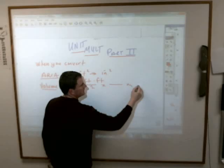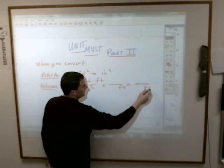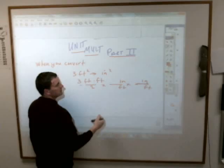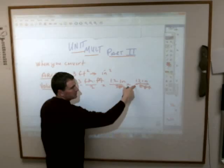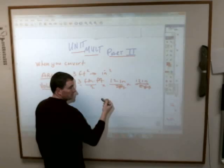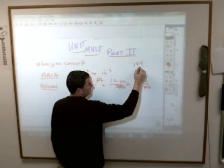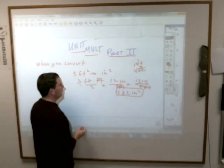Feet squared is double the label feet, so when you change it into inches you need double the unit multipliers. Each of the feet needs to close off with one of the feet on the bottom. So instead of being 36, it actually ends up being three times 12 times 12. That's 144 times 12, which is 432 inches squared.